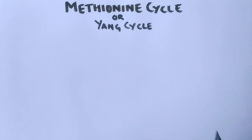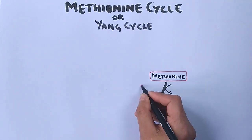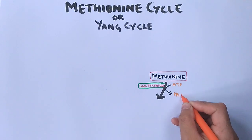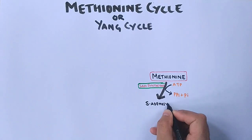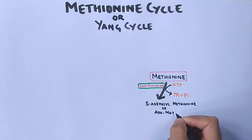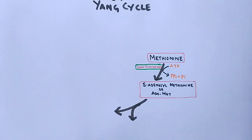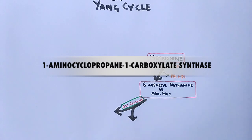The methionine cycle or Yang cycle starts with methionine getting catalyzed by SAM synthetase enzyme with energy from an ATP molecule. From this reaction, methionine gets converted into S-adenosylmethionine, or AdoMet. Then this AdoMet is acted upon by the ACC synthase enzyme.